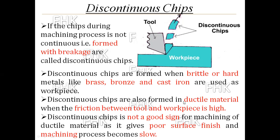Discontinuous chips can also form in ductile material when the friction between the tool and workpiece material is high — even if the material is ductile, you will get discontinuous chips. Discontinuous chips are not a good sign for machining of ductile material, as they give poor surface finish and the machining process becomes slow. Formation of discontinuous chips in ductile material is not expected during machining.